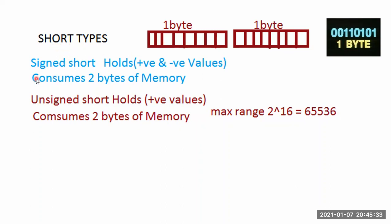Short is further sub-classified into signed short and unsigned short. Signed means it will hold both positive and negative values. Short provides two bytes of memory to store the data. When it comes to unsigned short, it only holds positive values, and it also provides two bytes of memory.